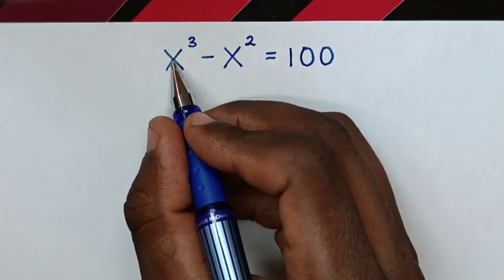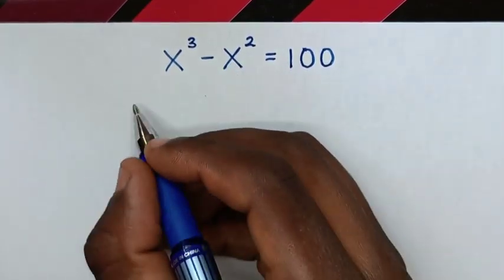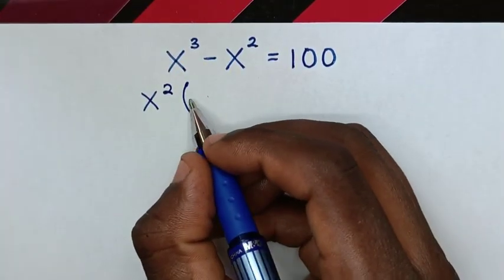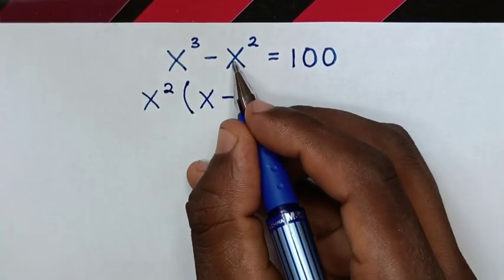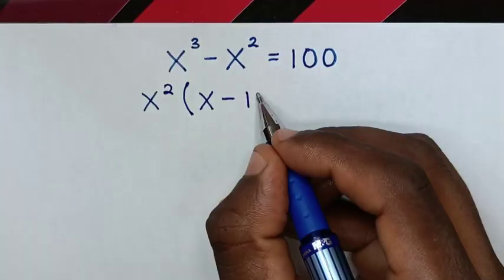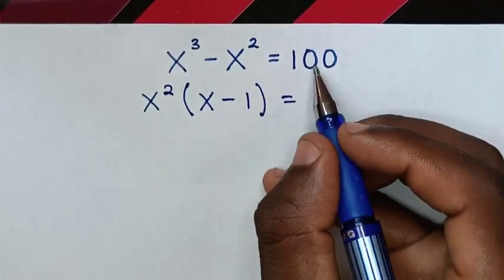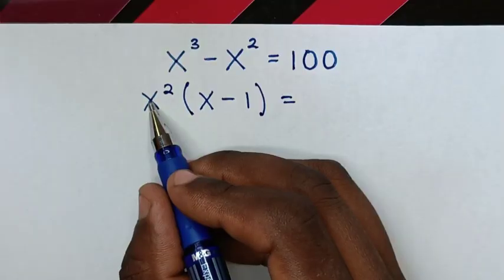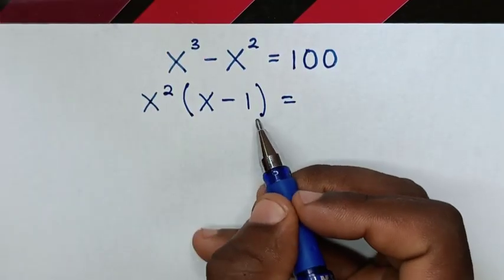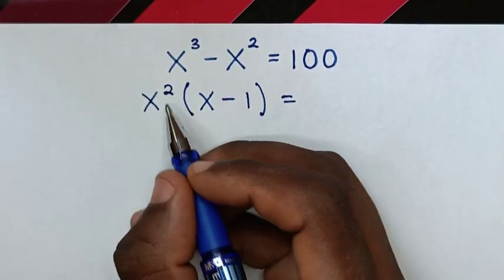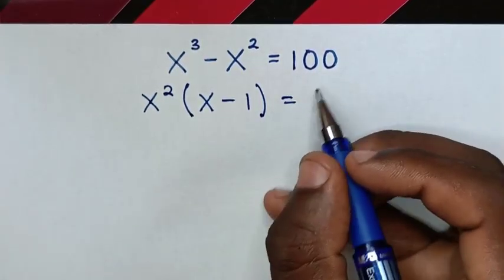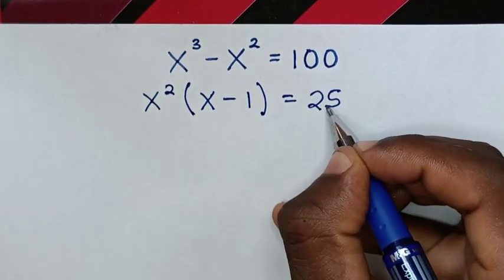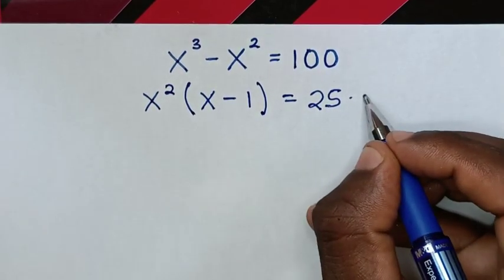From our equation, x power 2 is common, so we take it out of the bracket: x squared times (x minus 1) is equal to 100. Now 100 can be written as 25 times 4, and 25 is 5 squared.